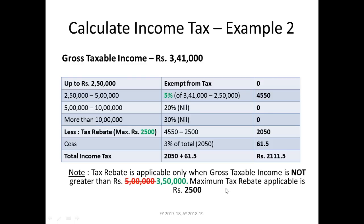These are some of the changes that have been made for FY 2017-18 and how we can calculate income tax based on those changes. Remember that this calculation is for income earned in FY 2017-18, assessed in AY 2018-19. For FY 2016-17 you should refer to the previous rules — ten percent on the first bracket and tax rebate of five thousand. Hopefully you have understood the process of calculating income tax based on the changes for FY 2017-18. Have a nice day.